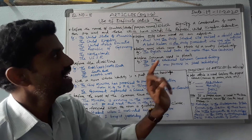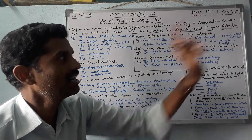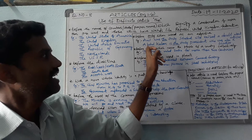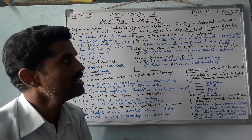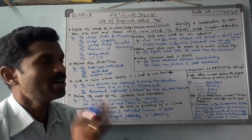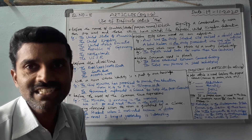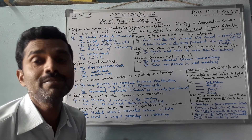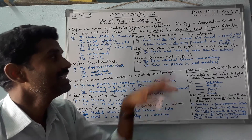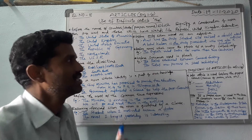Next, before 'only' when used as an adjective, 'the' is used. For example: 'Anil was the only student who raised a doubt about articles.' Also: 'Abdul Kalam is the only president who was also a scientist.' Among all the presidents of India, only Abdul Kalam was a scientist — so before the word 'only', the definite article 'the' is used.